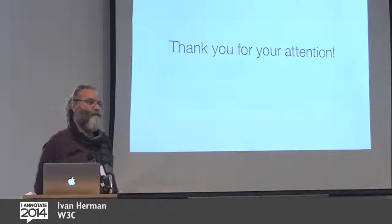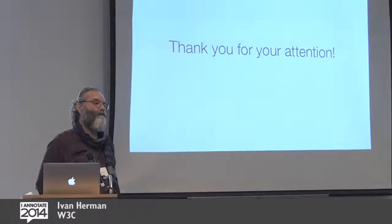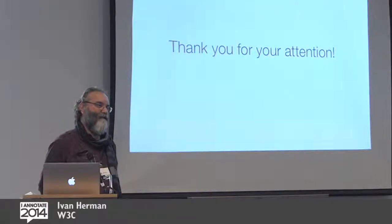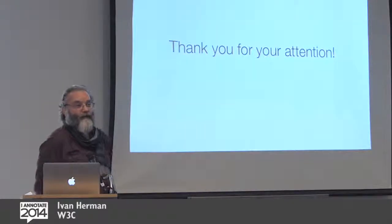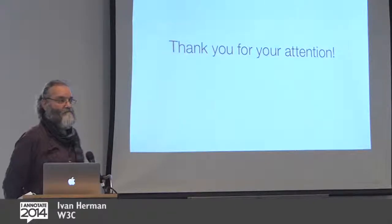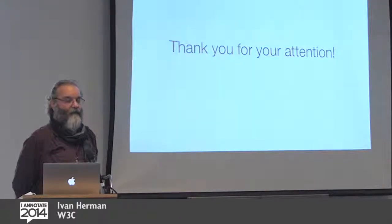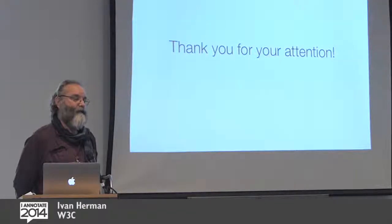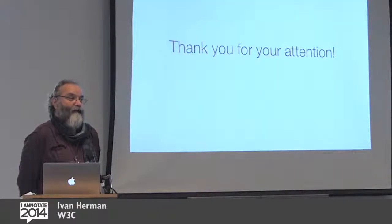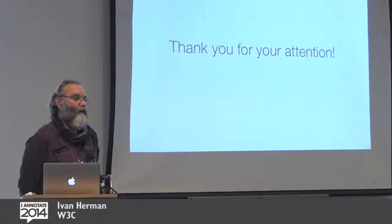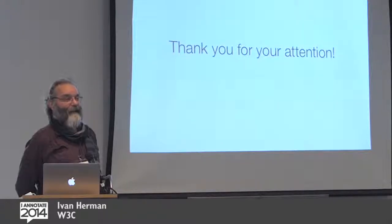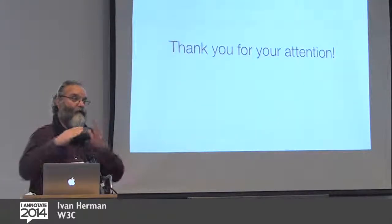Greg Kellogg: Ivan, you mentioned CSV on the web as an example of where we might annotate spreadsheets to imbue meaning on them. One of the use cases there is to actually create basically RDF where none existed before. Do you imagine that type of thing might be in scope here to imbue more machine-processable meaning? Ivan: That may be, although absolutely. That said, I had in mind something much simpler — journalists use public data for various purposes and want to share annotations on what they do. So it can be as simple as that, as well as adding additional metadata on CSV to make it more understandable. There's a whole spectrum there.